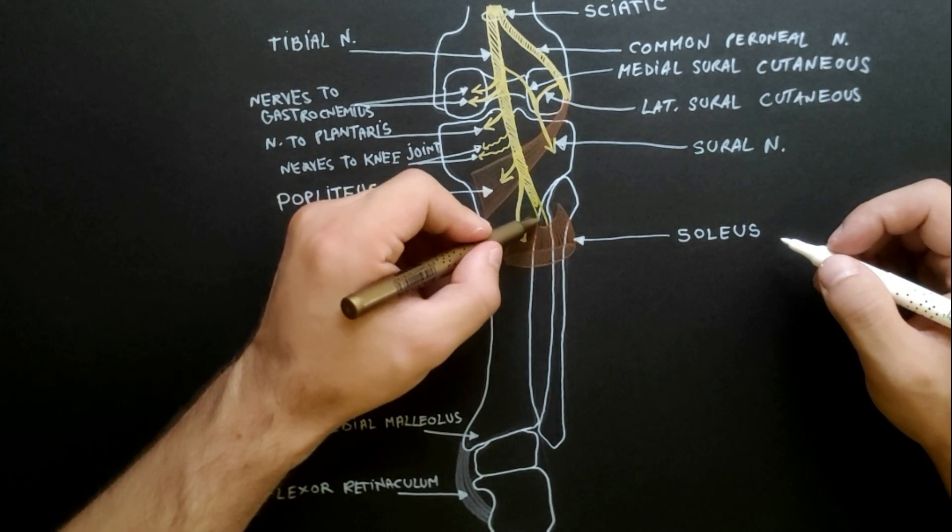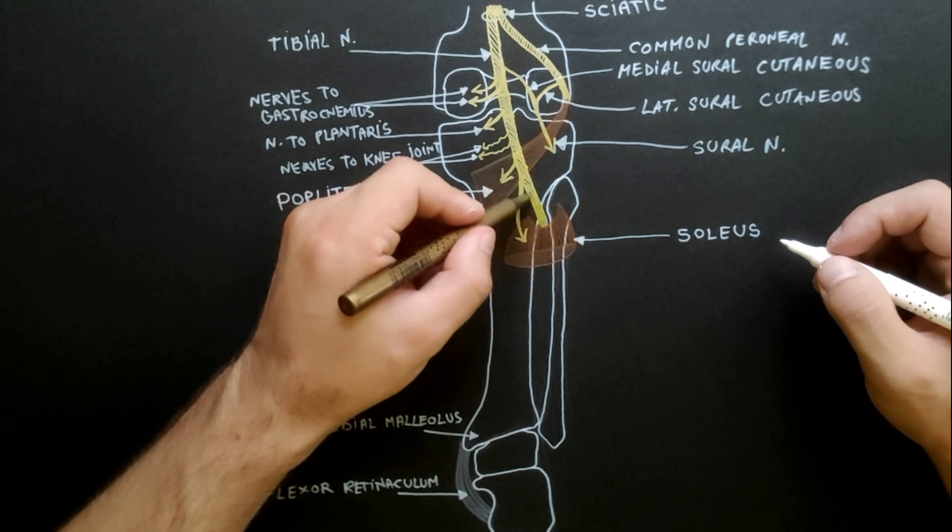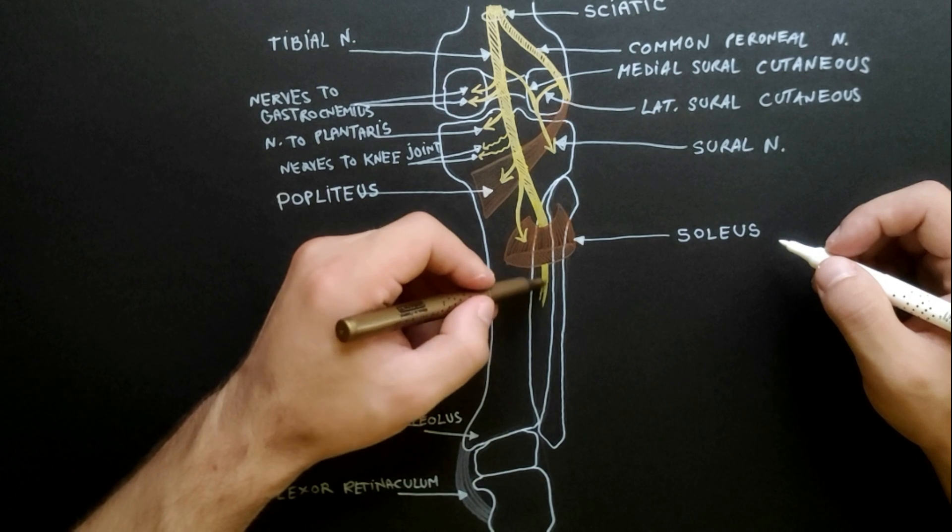After giving these branches, the tibial nerve passes deep to the tendinous arch of soleus to enter the back of the leg.